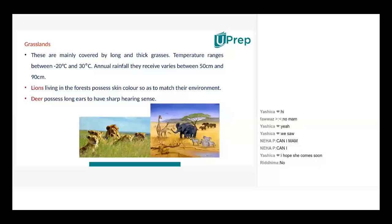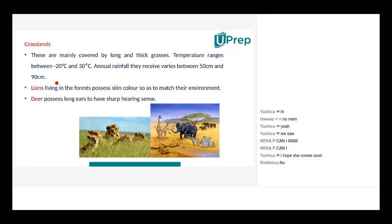Now we'll start off with grasslands. What are grasslands? See exactly the picture that you see where the lions and the pride of lions are sitting — they have long and thick grasses, not the grasses that we have in the park and the garden. These thick grasses are as tall or taller than us, the leaves are very broad. Temperature is somewhere between minus 20 to 30 degrees Celsius.